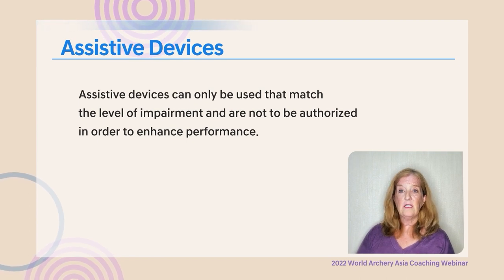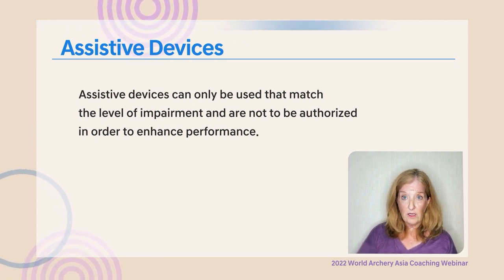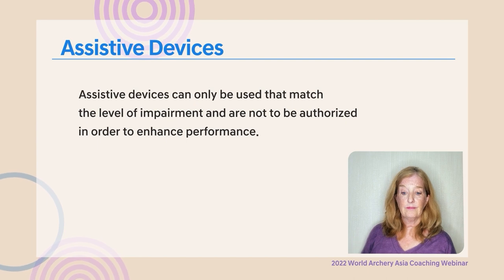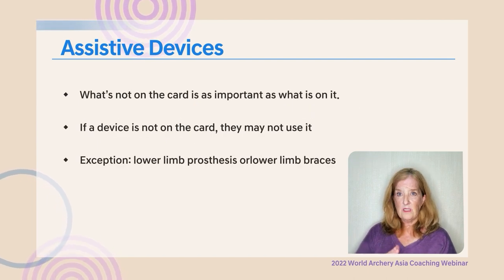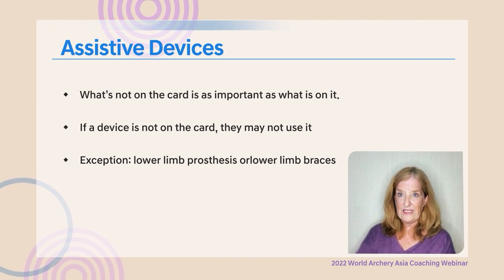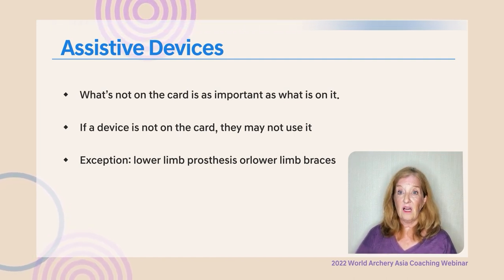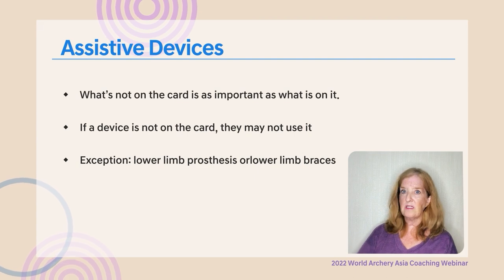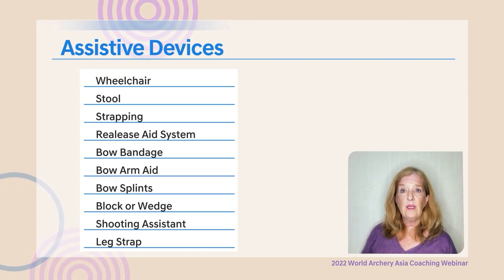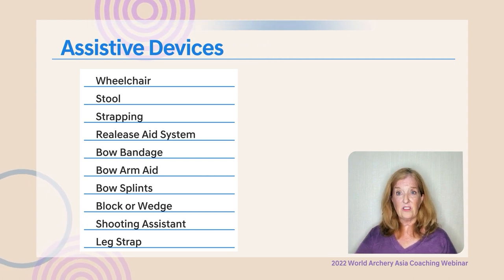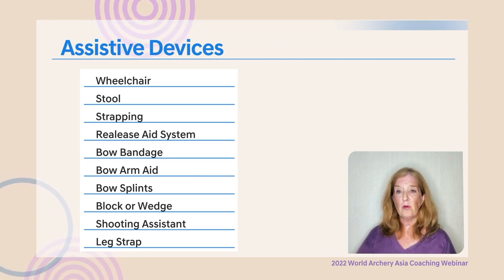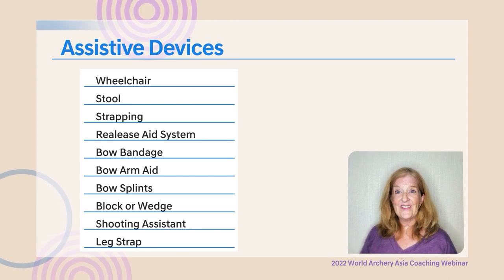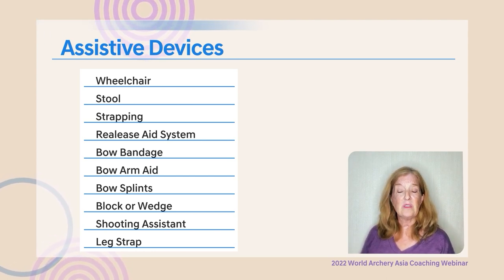Assistive devices can only be used to match the level of impairment — they cannot enhance performance. What's not on the card is as important as what is on it: if a device is not listed, the athlete is not allowed to use it. The exception is lower limb prosthetics or lower leg braces, which are not regulated by World Archery. If an athlete is a standing archer with no balance issues, there will be no assistive devices listed at all.